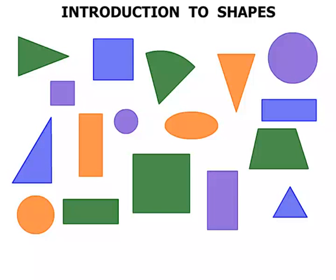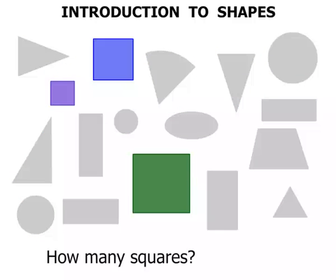Now, we've got a whole bunch of different shapes there. And the first question is, how many squares? Well, let's just look at the squares. We'll fade out everything else.